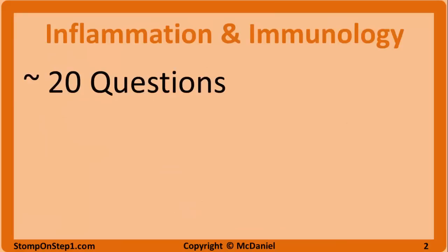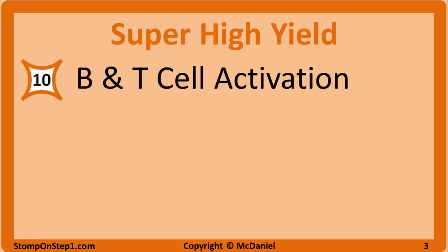Based on my calculations, you'd get roughly 20 questions on the actual exam from inflammation and immunology, making it the highest yield chapter I've covered so far. This is probably the highest yield general topic-type chapter. We'll start with the highest yield topics and work our way down, and I'll try to give you a few key tips for each one.